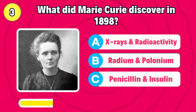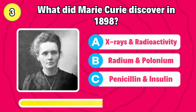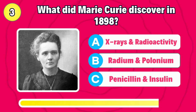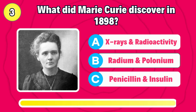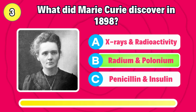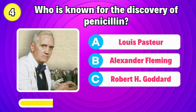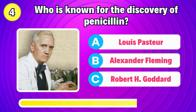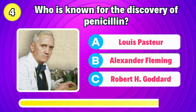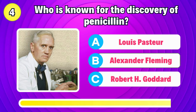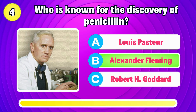What did Marie Curie discover in 1898? Right, it's radium and polonium. Who is known for the discovery of penicillin? Correct, it's Alexander Fleming.